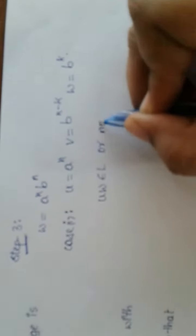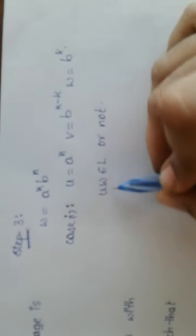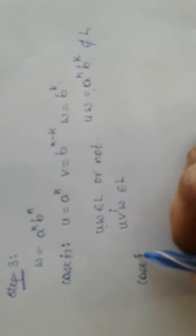In case 1, let U = A^N, V = B^(N-K), and W = B^K. First we need to check whether UW belongs to L or not. Clubbing U and W gives us A^N B^K. As the parts of A and B are not equal, this word generated does not belong to L. So in case 1 we are failing to prove that this particular word belongs to our language L.